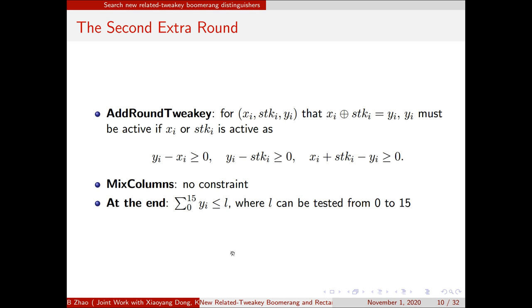For the second extra round, since the add-round tweakey, the state X_i, the difference of the X_i will be unknown. So if X_i or STK_i active, Y_i must be active. We use the following three equations to constrain that. And since the mixed-column is a linear function, and for the last round, we don't consider it, so there is no constraint for it. At the end of the model, we use Y_i equation to limit the active bytes. We can test it from 0 to 50.